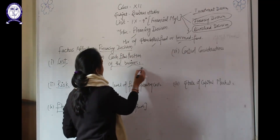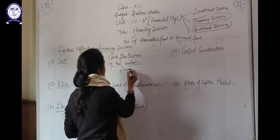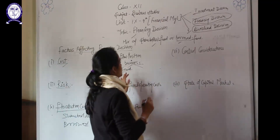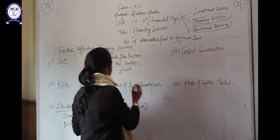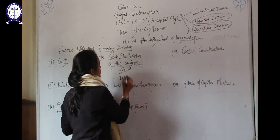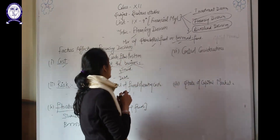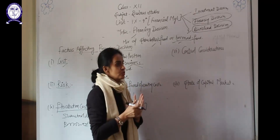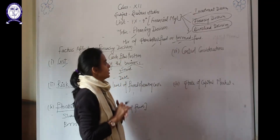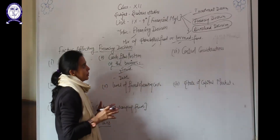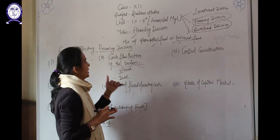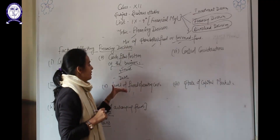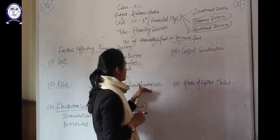Now, the cash flow position of the company. If the company's cash flow position is sound, the company is in a condition to pay interest on time, and at that time the company can use debt. If the cash flow position is not sound, in the case of equity shares there is no compulsion to pay dividend, so in that case the company can use shareholder funds.